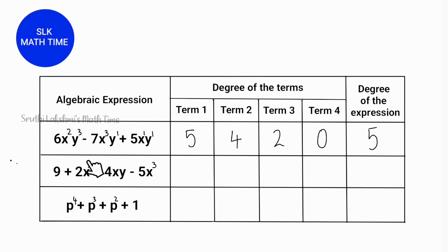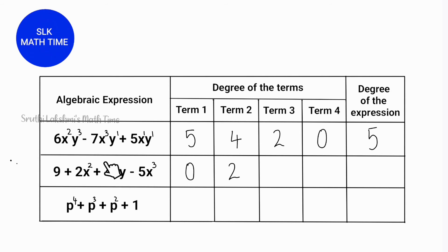Now let's move on to the next expression. Here we have 4 terms. The first term is 9, which is a constant, so its degree is 0. Our next term is 2x² — only 1 variable and 1 exponent, so the degree is 2. The third term is 4xy: both variables have no exponents, so 1 + 1 = 2. The fourth term is 5x³ with 1 exponent and 1 variable, so the degree is 3. The greatest of our degrees is 3, so the degree of this expression is 3.